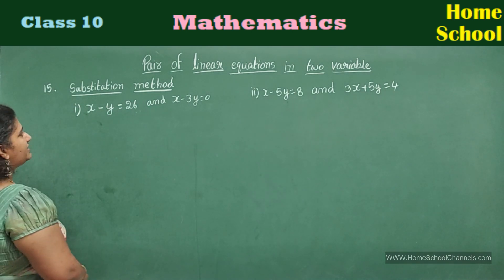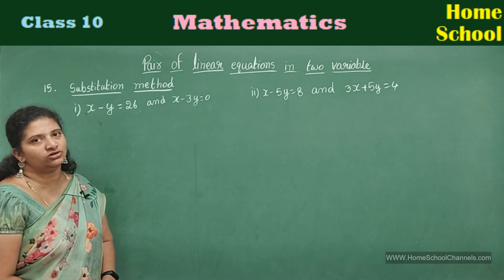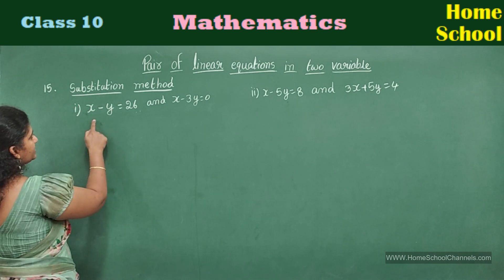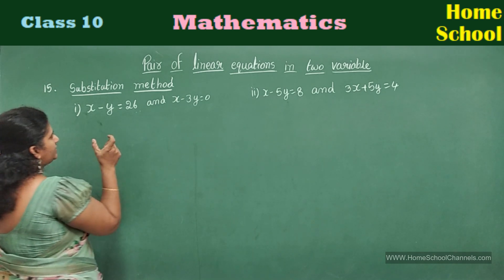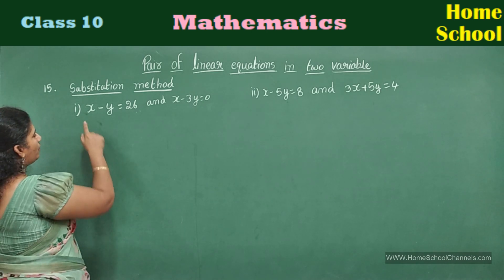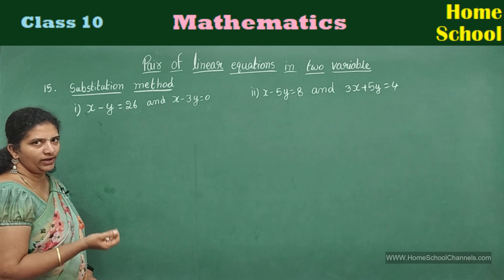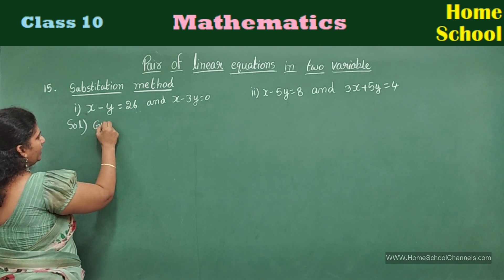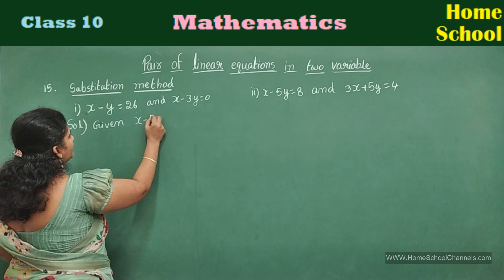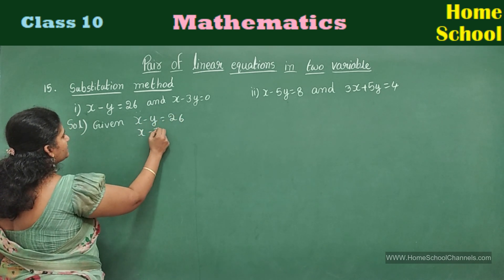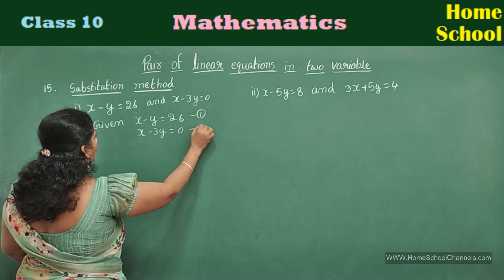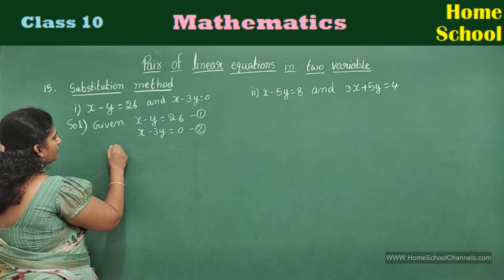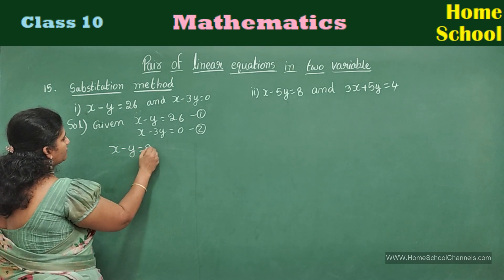First problem: x minus y is equal to 26, and x minus 3y is equal to 0. In substitution method, observe the equations first properly — check which term is smaller, and go with that term. Here both have coefficient 1 for x and y, so no problem — any one variable you can take. Let me take the first equation. In the solution, write given: x minus y is equal to 26 and x minus 3y is equal to 0. Mark them equation 1 and equation 2. Now take any one equation — let me consider the first equation: x minus y is equal to 26.